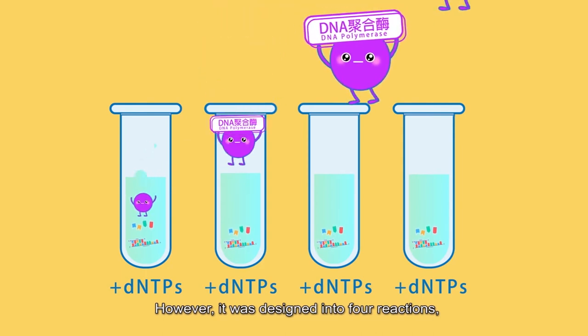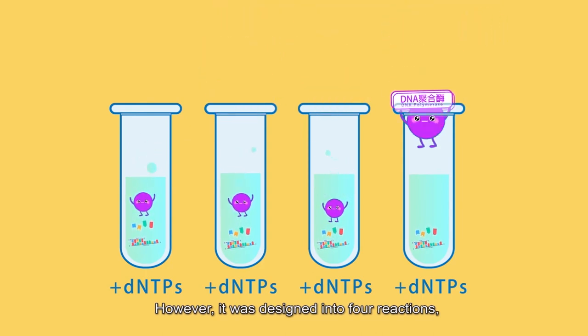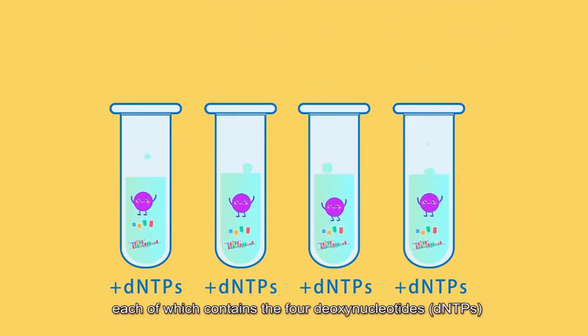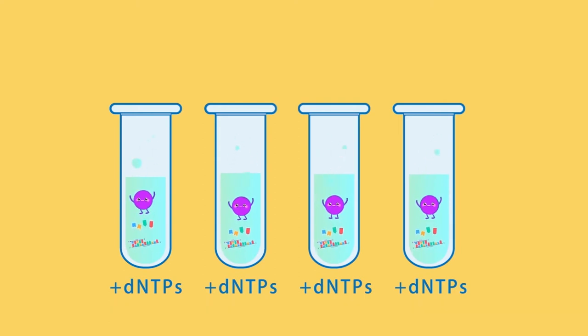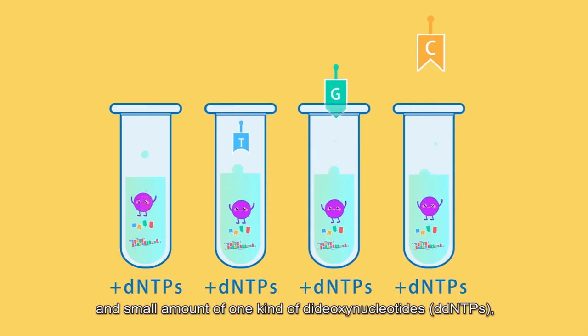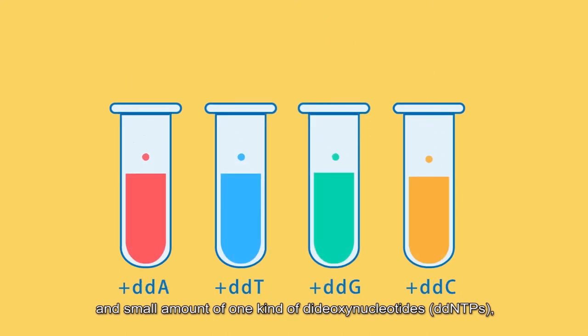However, it was designed into four reactions, each of which contains the four deoxynucleotides, DNTPs, and small amount of one kind of dideoxynucleotides, DDNTPs, the analogues of deoxynucleotides.